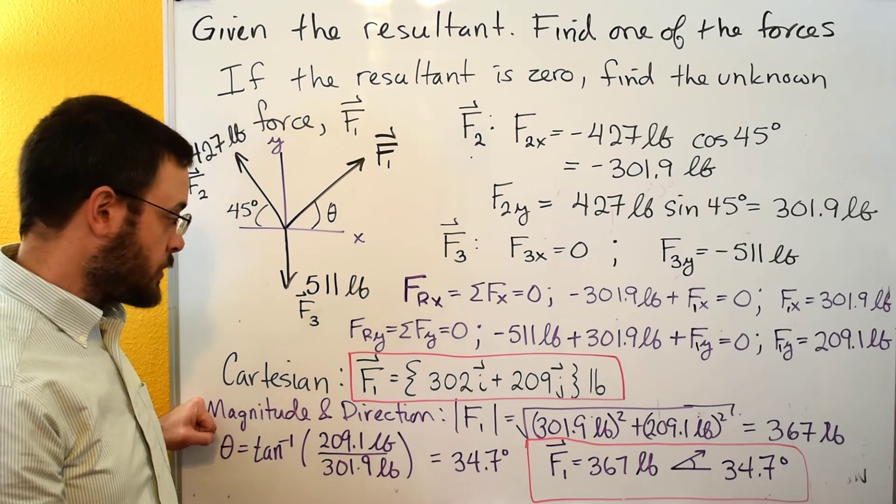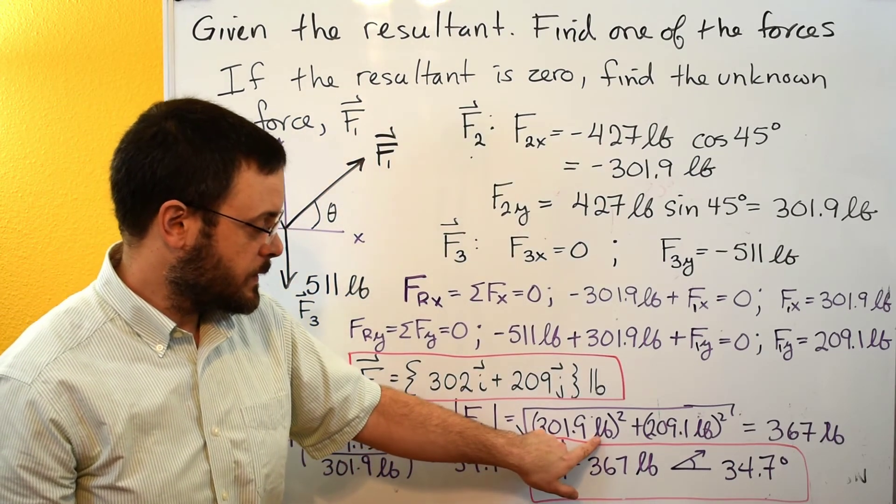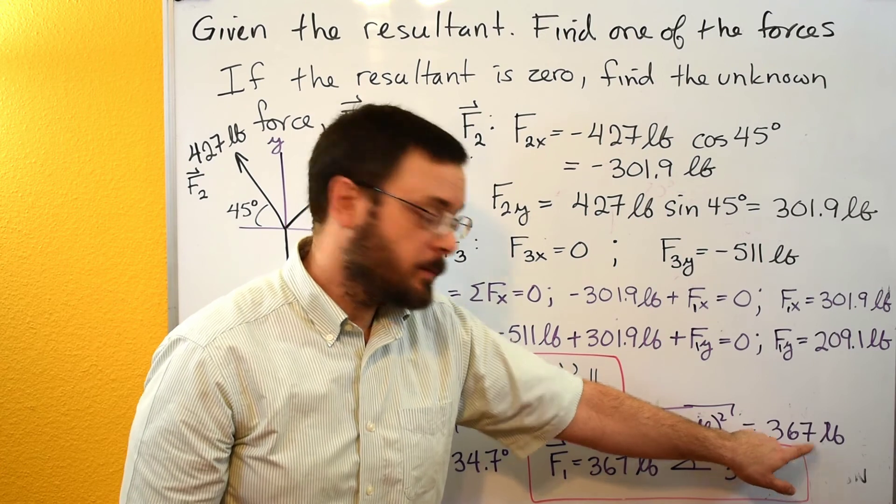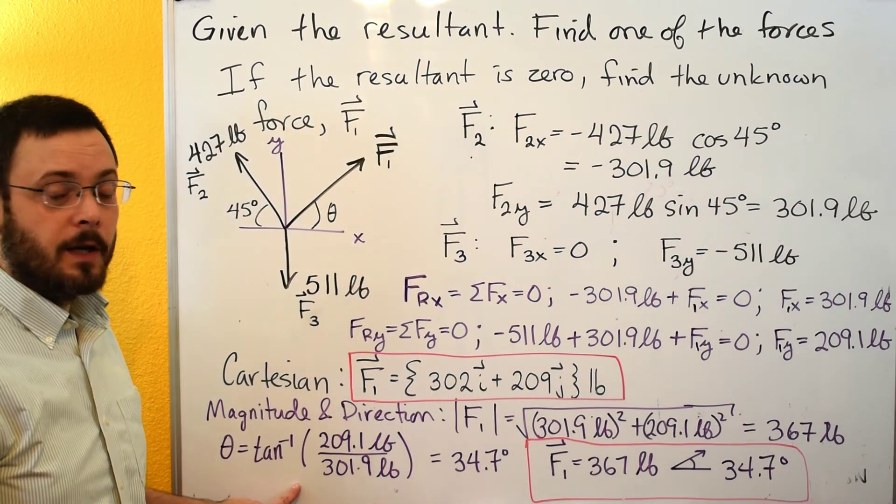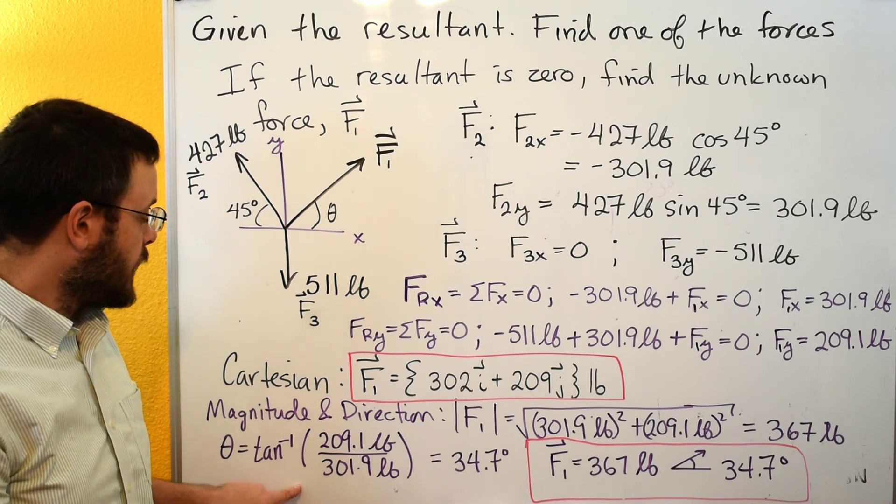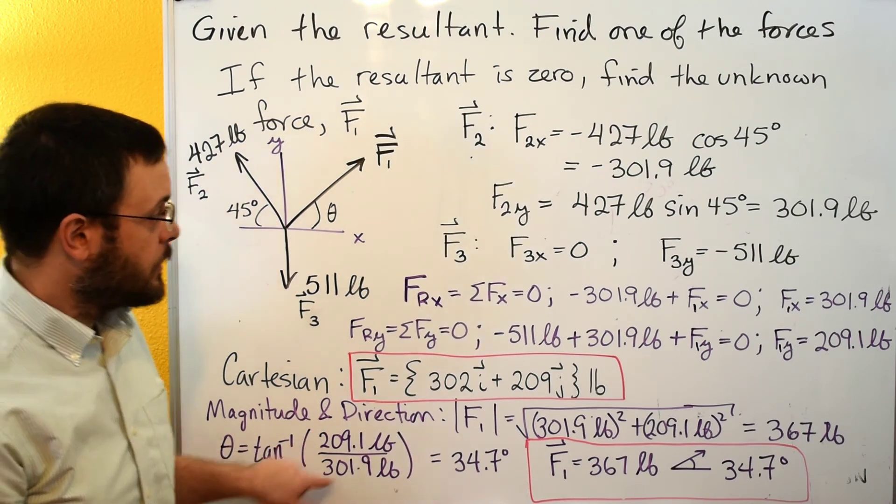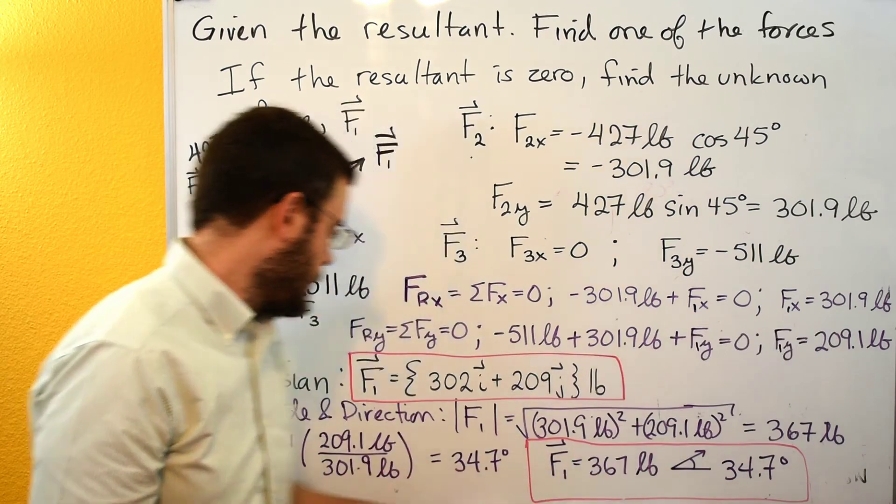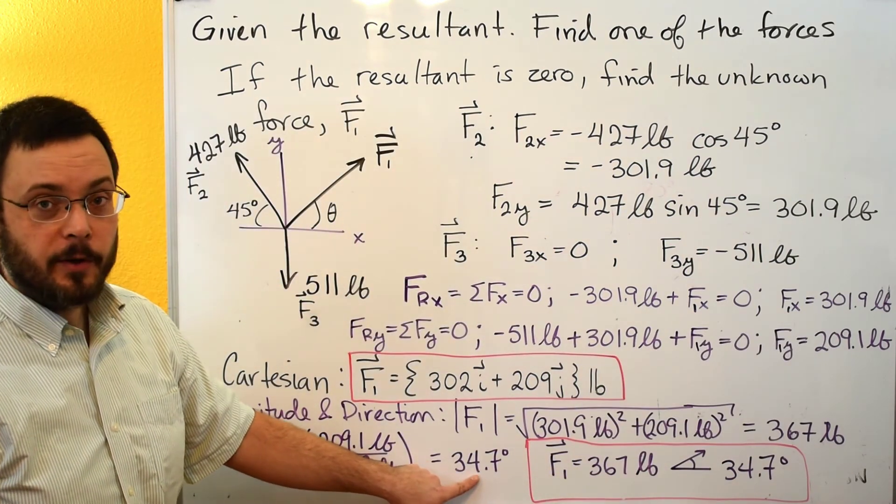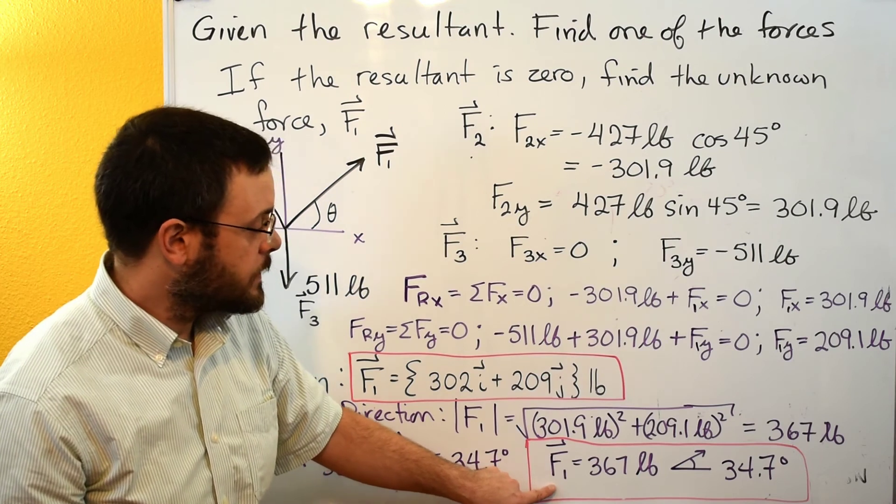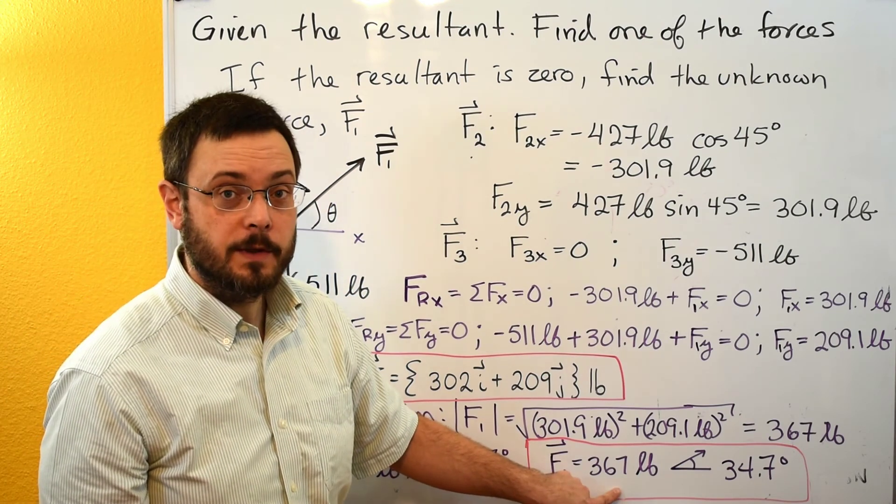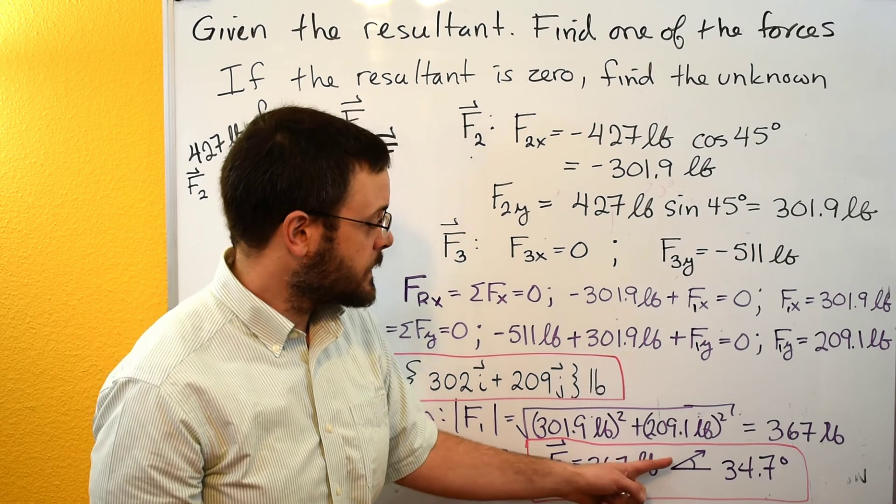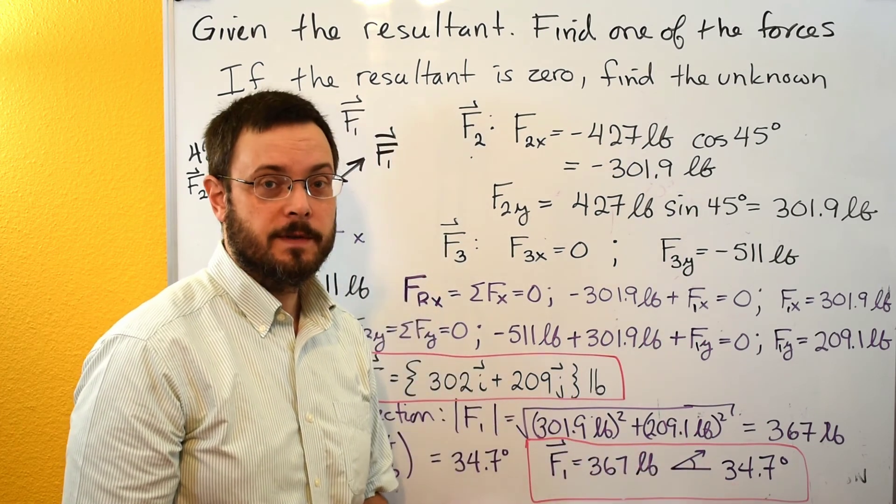If they had asked for F1 in magnitude and direction notation, we can get the magnitude. It's just the x component squared plus the y component squared, and then take a square root. That gives us 367 pounds. And then we need the angle. Remember the angle is the inverse tangent of the absolute value of the y component divided by the x component. So that would be your y component, 209, divided by your x component, 302. Take that inverse tangent, you get about 35 degrees. And then we could write it using this notation. So F1 is equal to its magnitude, 367 pounds, show the x-axis, show this angle measured counterclockwise from the x-axis to the vector, and then 34.7 degrees.